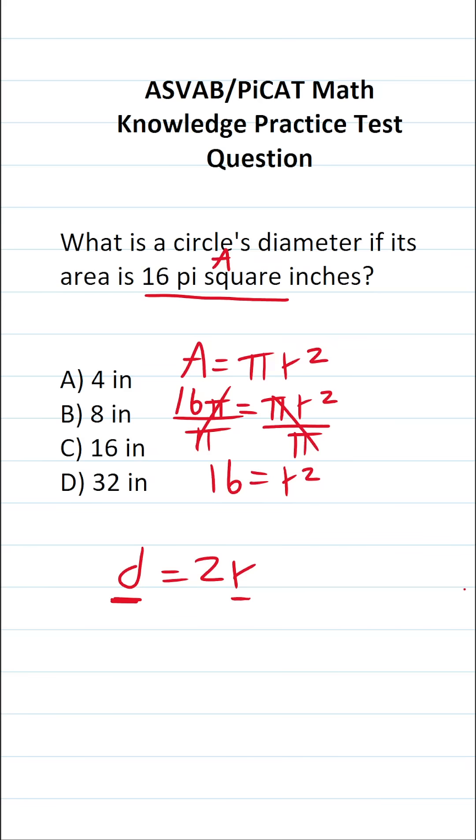To get r by itself, we have to get rid of this square. And to do that, we're going to do the opposite operation. That is to say, we're going to take the square root of both sides of this equation. These cross out, leaving us with r over here. The square root of 16 is 4.